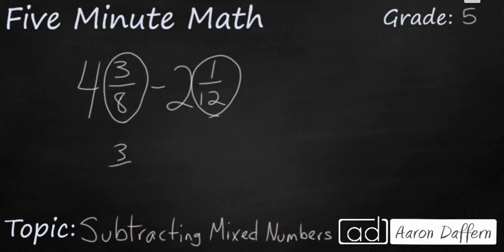So you see we're looking at 3 eighths and 1 twelfth. We cannot subtract across unless the denominators are the same. And you see our 8 and 12 are different. So we're going to look for our least common multiple. I'm going to list out my multiples of 8 and 12. So 8, 16, 12, 24.